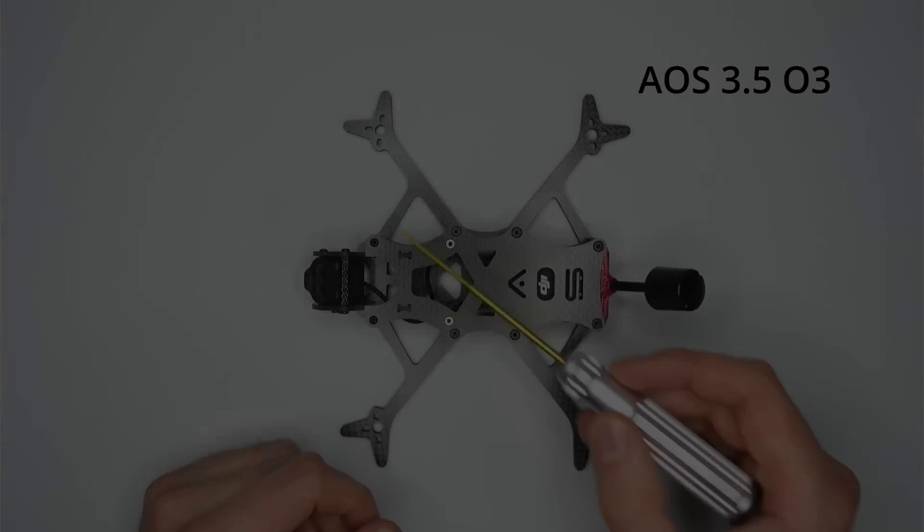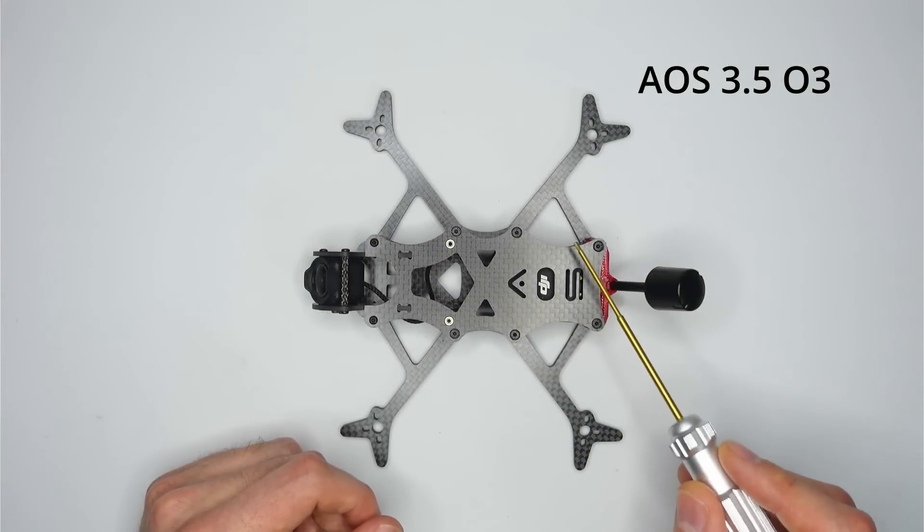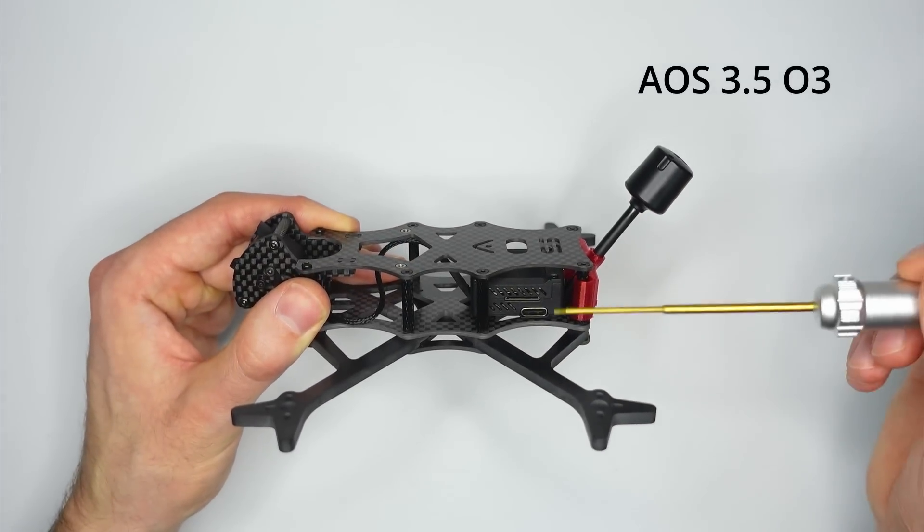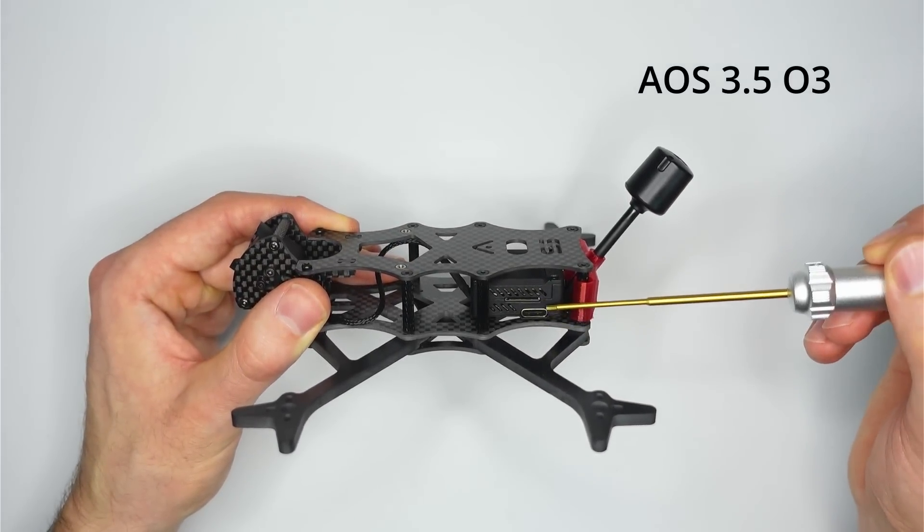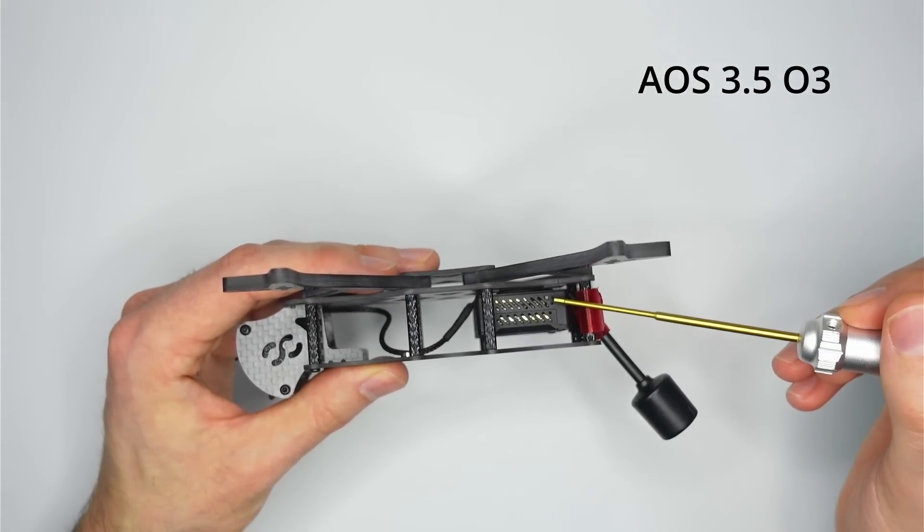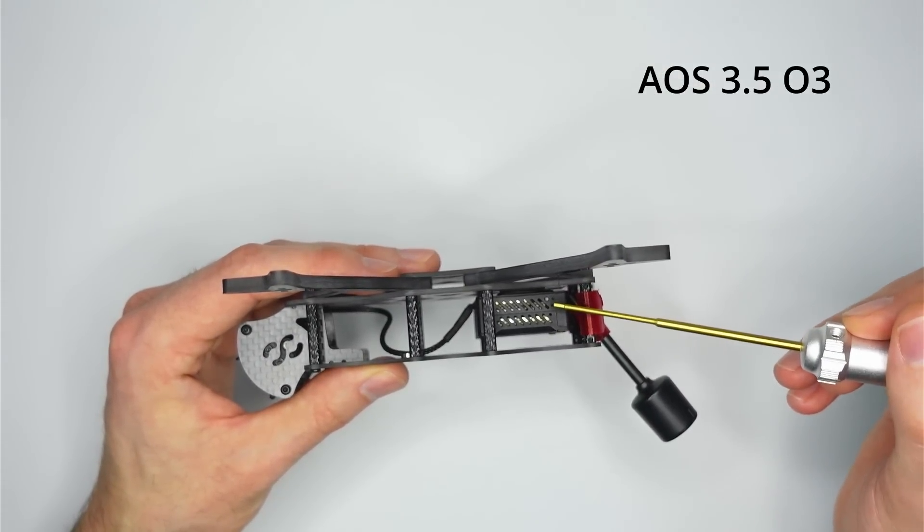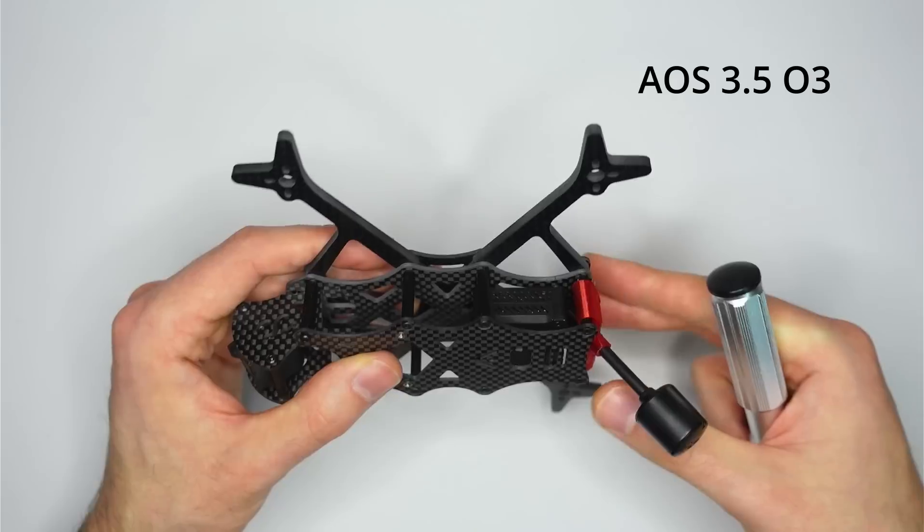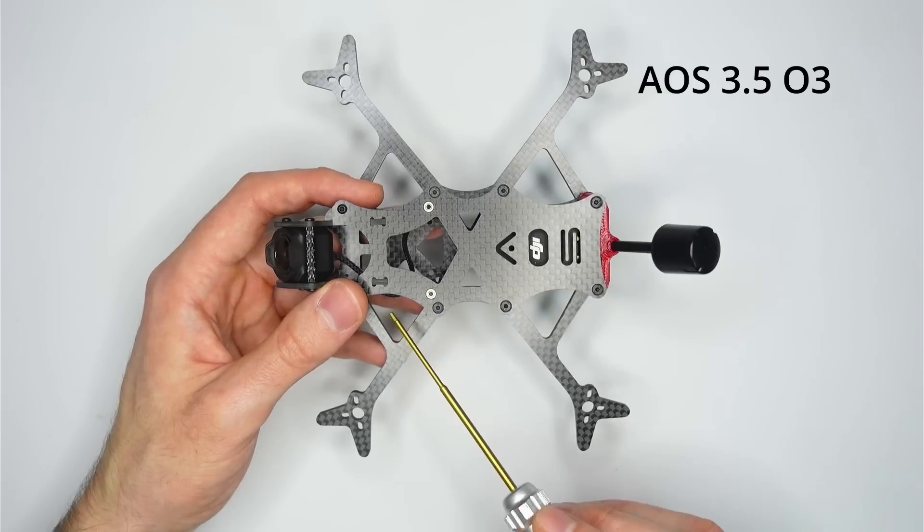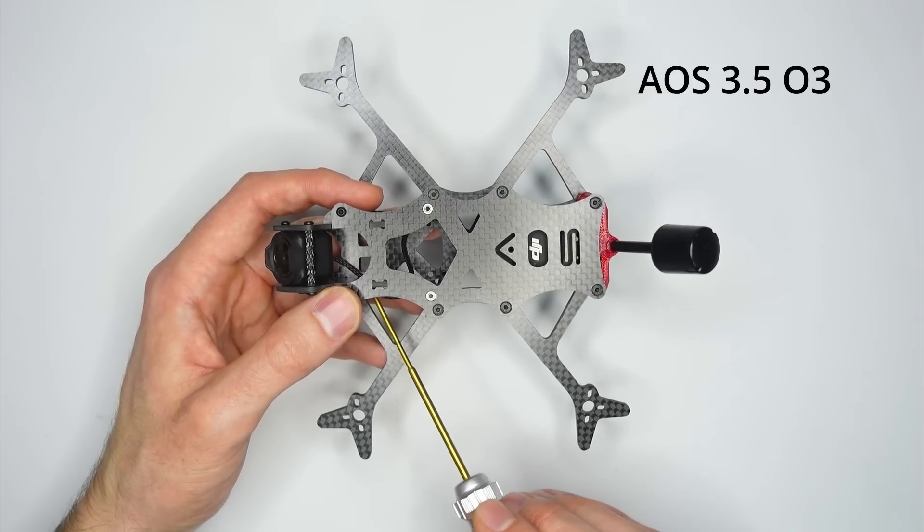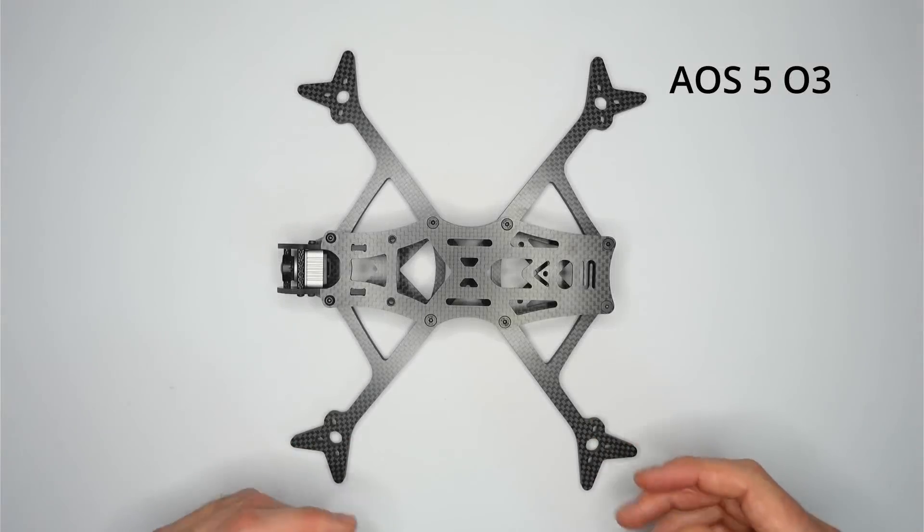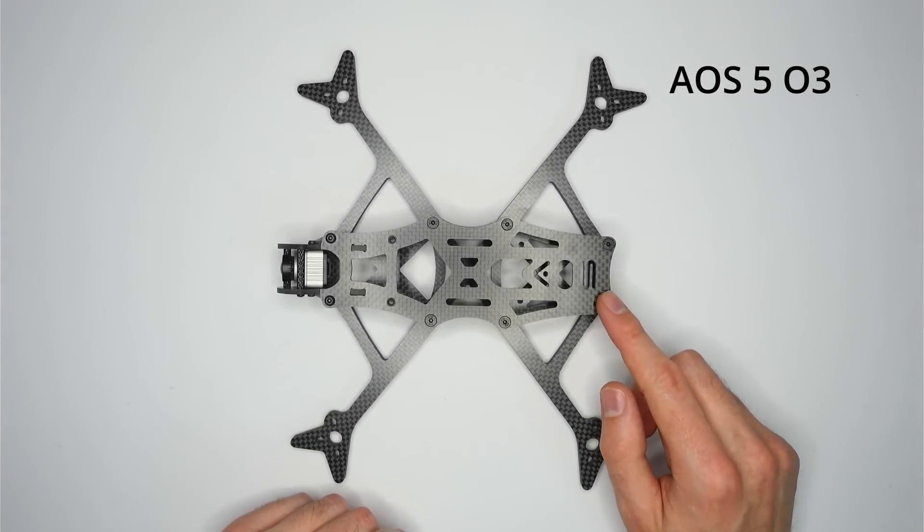The body of the AOS 3.5 O3 has also been slightly extended, and that's to provide really easy access to the SD card slot, the USB-C port and the bind button on the new O3 air unit. So you're going to be able to get to those really easily. And also to give you access to USB ports on any electronics that you have in the frame, whether you have it mounted in the front, middle or rear position.